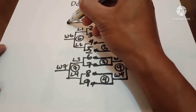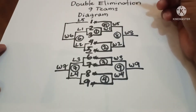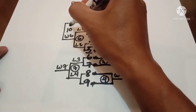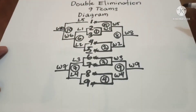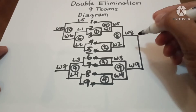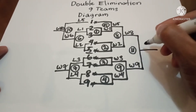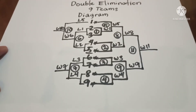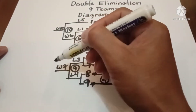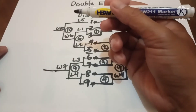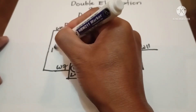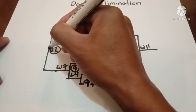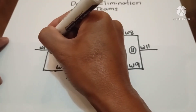In the losers bracket, Loser 5 plays against Winner 6 in Game 10, giving us Winner 10. Winner 7 plays in Game 11, giving us Winner 11. Then Winner 10 and Winner 7 play in Game 12, giving us Winner 12.